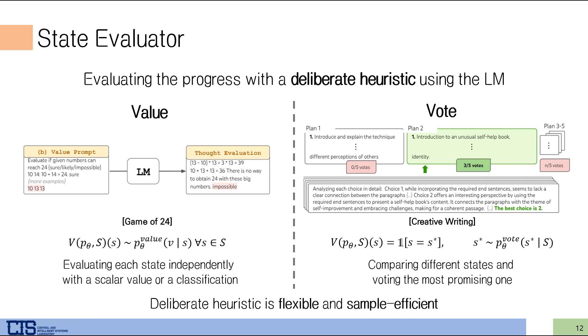The state evaluator is the novelty of this paper. The main difference from existing work is how to utilize heuristics. Previous works such as Deep Blue or AlphaGo utilized heuristics as programmed or learned. ToT utilizes the heuristics with LM, and this makes the model more flexible and more sample-efficient. They suggest two types of evaluators: valuing each state independently and voting across states. The value evaluator rates each state with a score or classification value. For Game of 24, they evaluate each thought as sure, likely, or impossible.